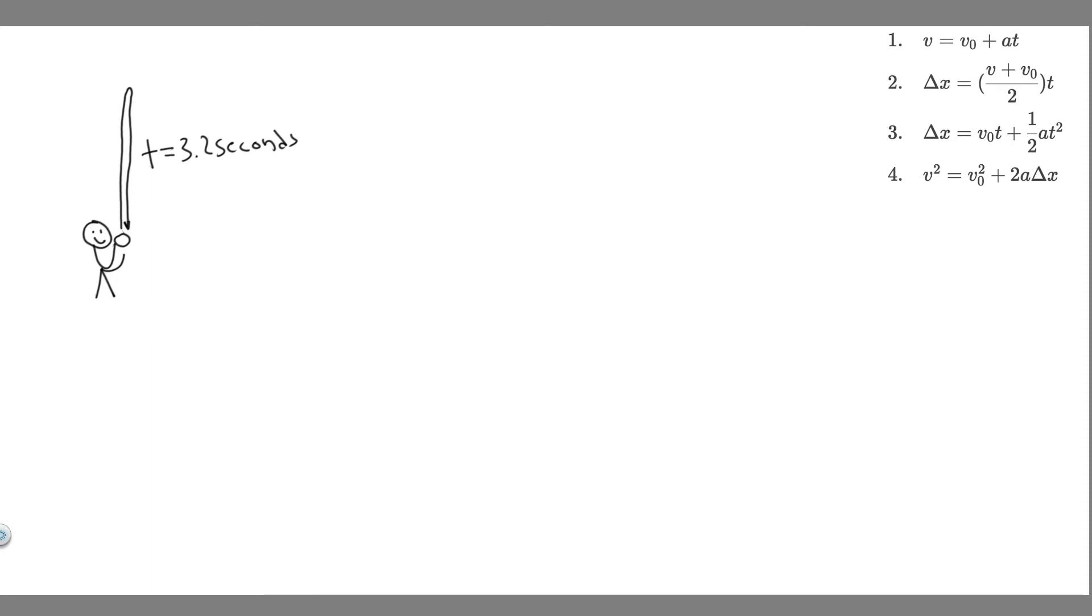So what we have going on - we have this juggler, they're going to throw a ball up, and then it's going to travel all the way back down in t equals 3.2 seconds. What we're trying to do is find the initial velocity, the speed going upwards. So we can just say v₀ equals question mark.